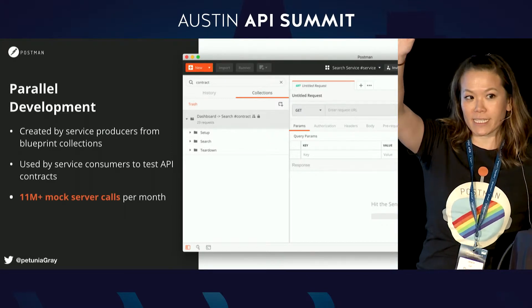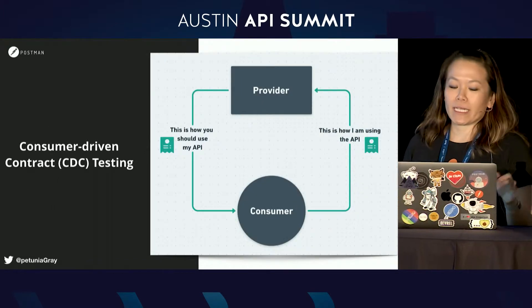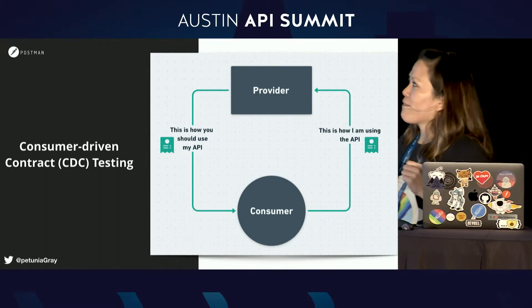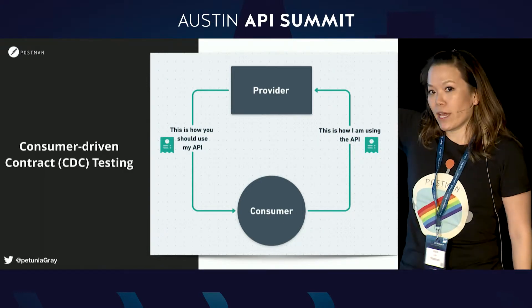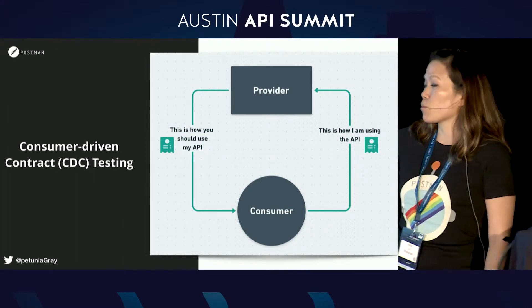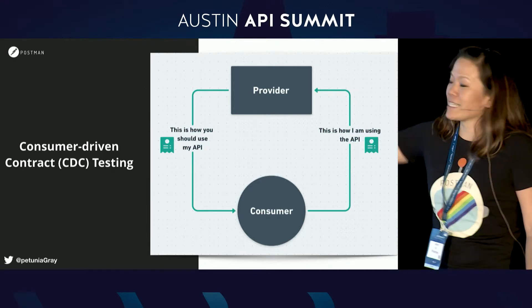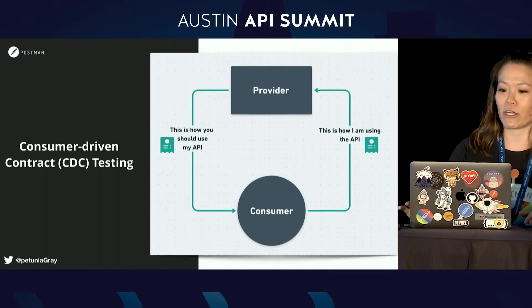Who does some form of CDC testing today? About half a dozen hands. So consumer-driven contract testing: you have the idea of a provider — in this example, me — and a consumer, one or more of you. I've floated a blueprint and say, 'This is how you should use my API.' The consumer says, 'This is how I am going to be using your API.' Once you have that consensus and communication has occurred, you have a contract or a pact — a soft binding agreement. This contract or pact allows you to continually evolve your microservices.